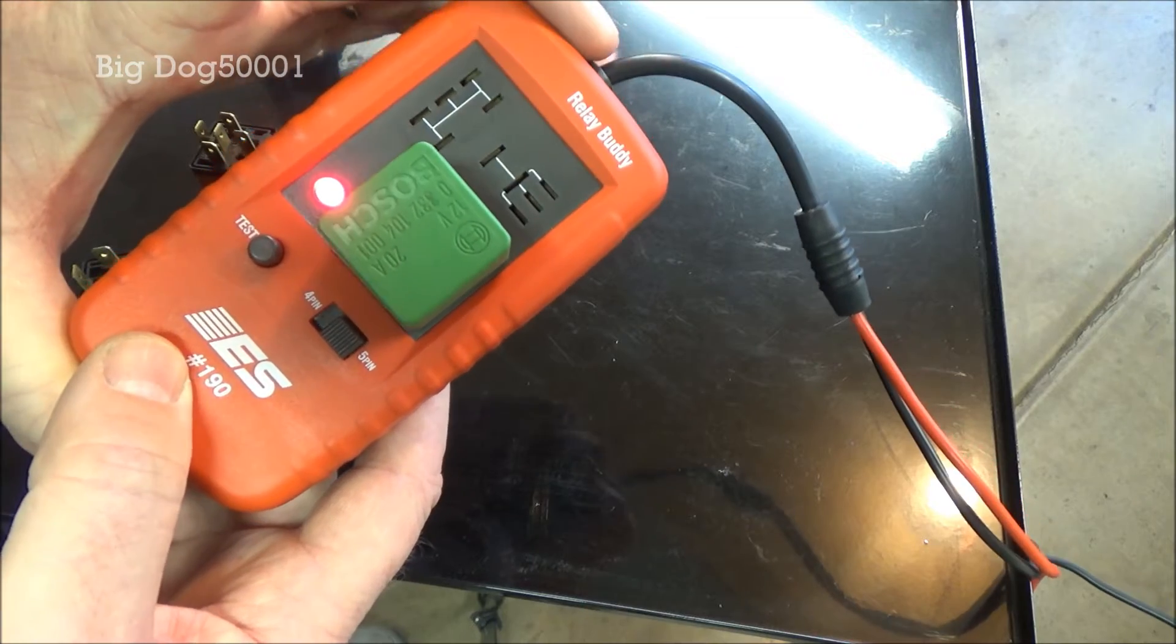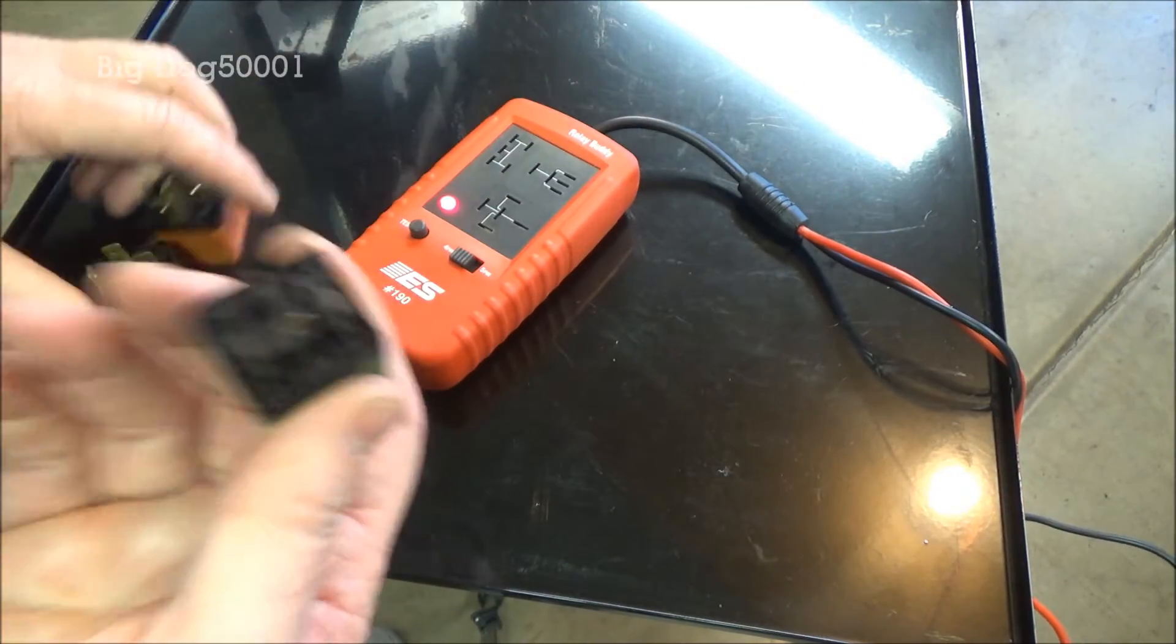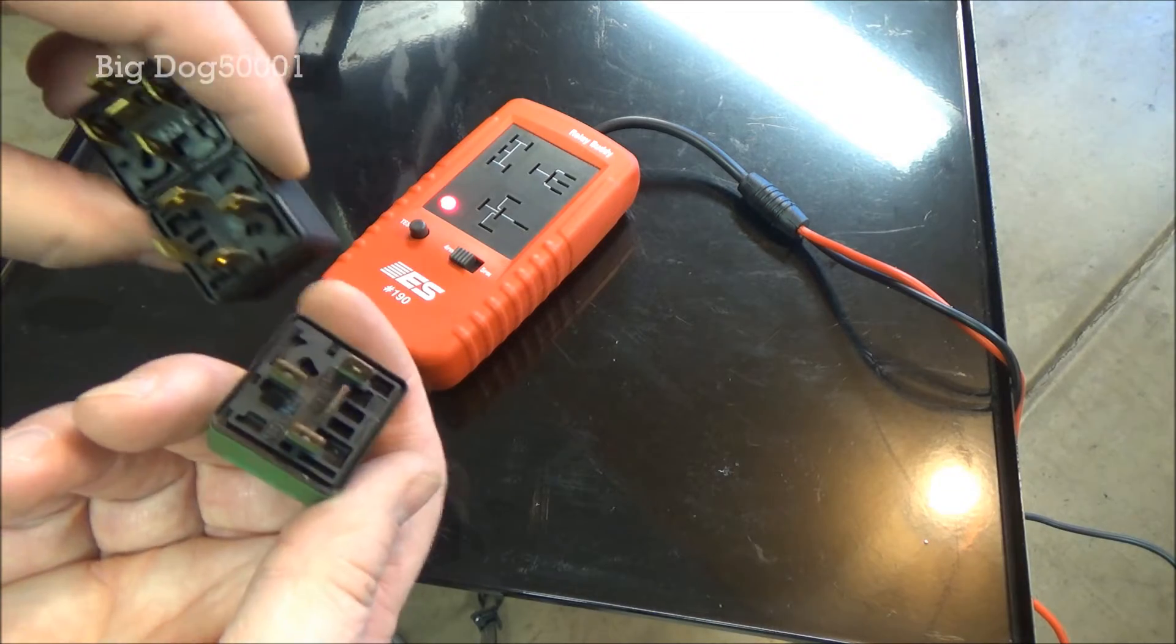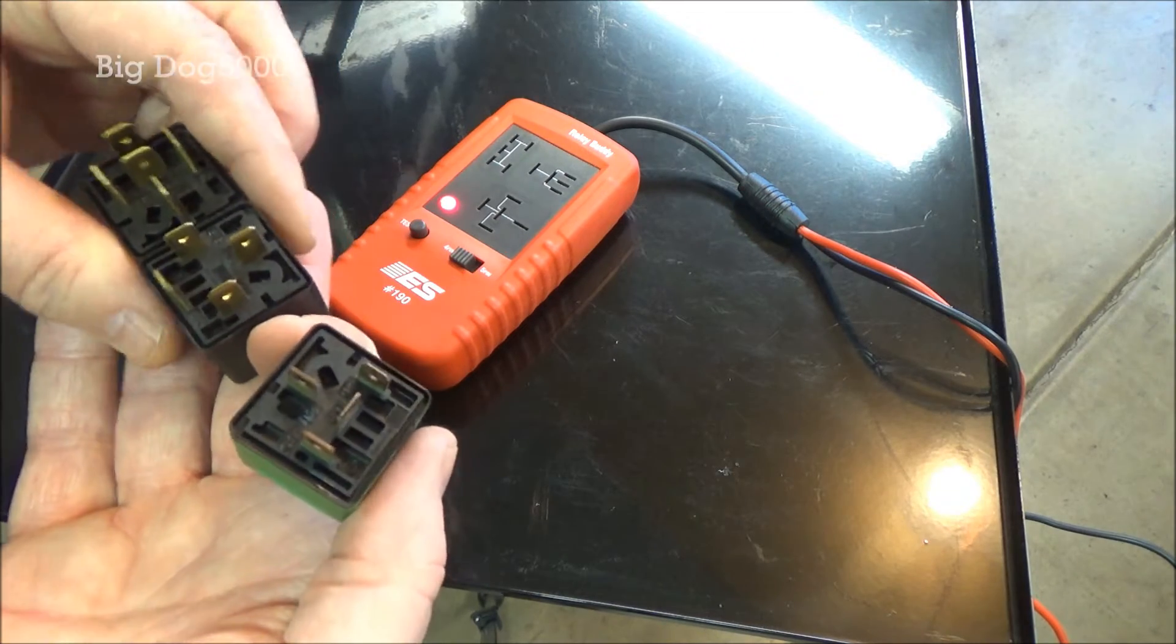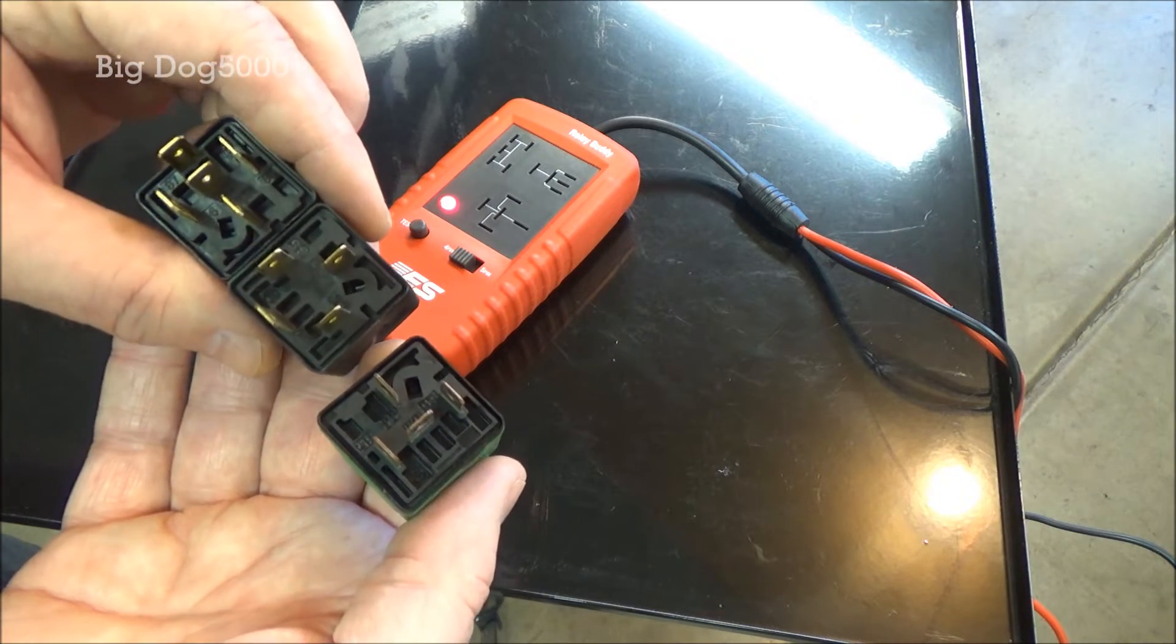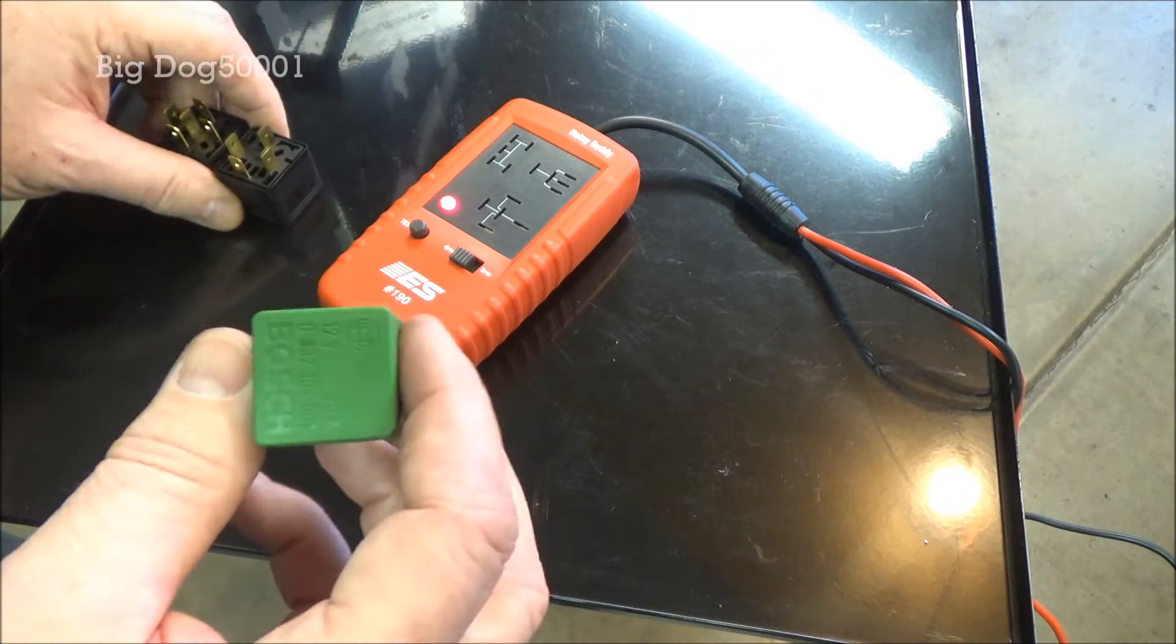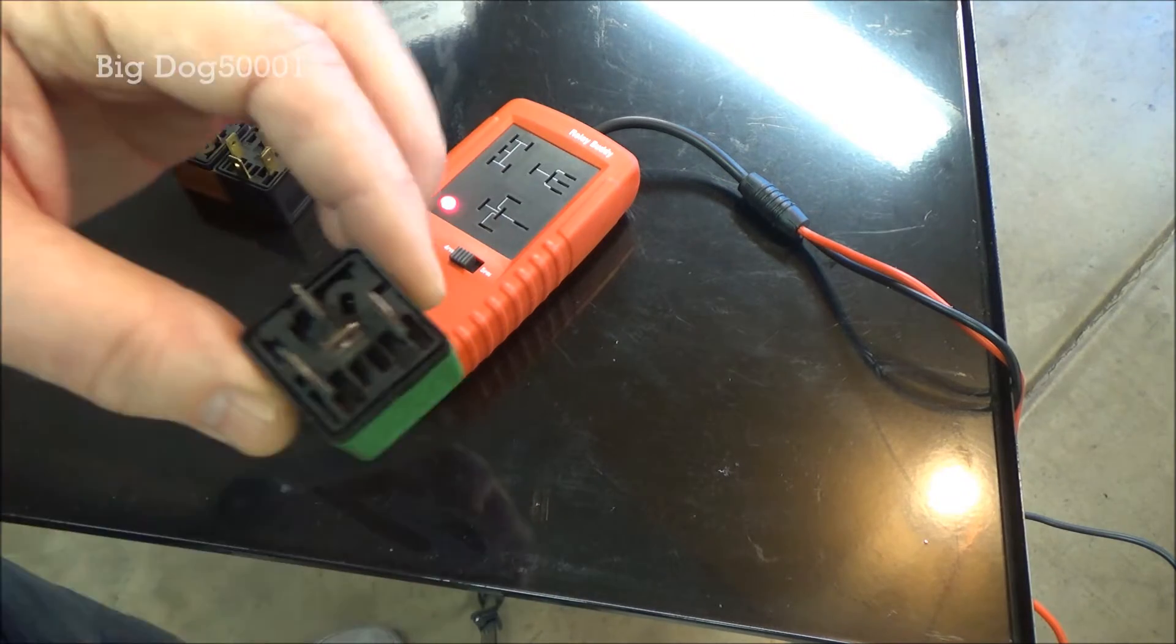Toyota has this design where it's running the power through all three of these when it's doing its series and parallel thing. So this relay is a bit different. This green one here, we're gonna have to test the old fashioned way. Now I'll show you how to do that real quick.